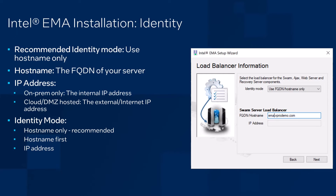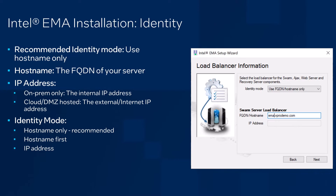What we recommend is to use hostname only, but you have the option of using a mix of hostname and IP address. We recommend hostname only. If you're going to be using a cloud-based provider, make sure that the hostname is identifiable through the internet. Most cloud-based providers will give you some type of DNS hostname, but if you own your own domain, such as vprodemo.com in the example, you can create an A record for your host. If you're going to use an IP address, especially if you're using cloud and DMZ, make sure that you're using the external or internet IP address, not the internal one that comes with your virtual private network in your cloud-hosted environment.